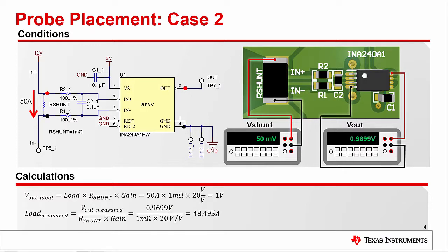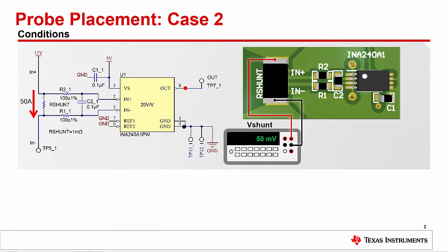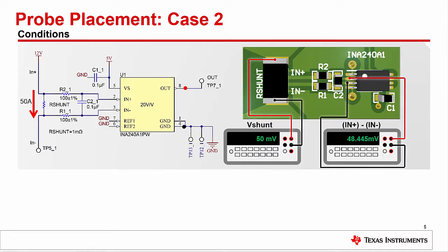The schematic looks fine, and our layout indicates symmetric Kelvin connections to the shunt. But, obviously, this part is broken. Or, is it? We decide to do some further probing, and discover that right at the device input pins, we measure a different differential voltage. It turns out that the differential between IN+ and IN- is 48.445 millivolts, a little lower than our ideal 50 millivolts.